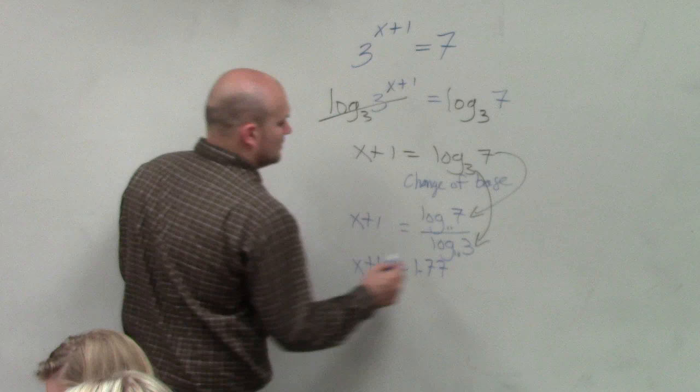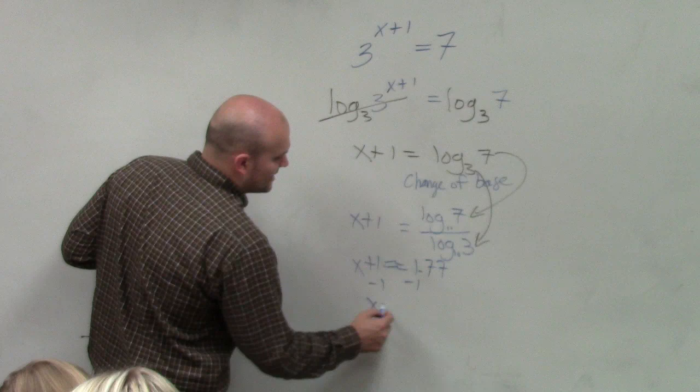Then I still need to solve for x, so I need to subtract one. So x is approximately 0.77. I am rounding, that's why I use the approximate sign. Okay?